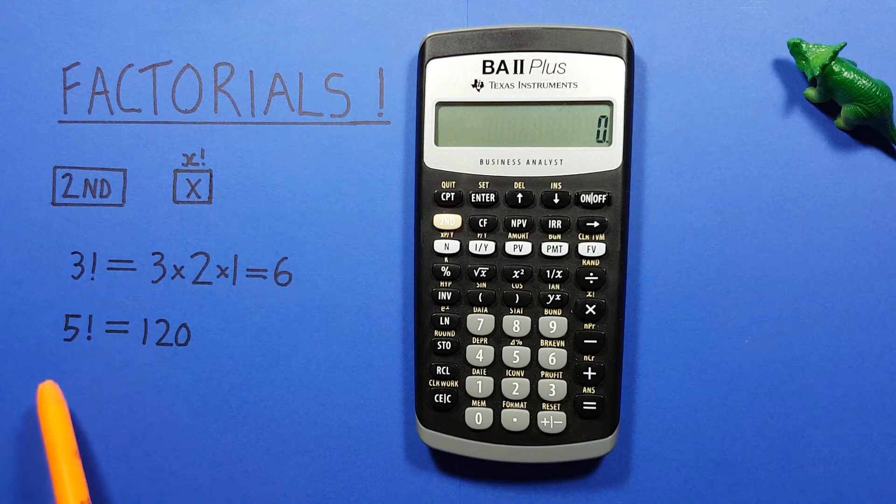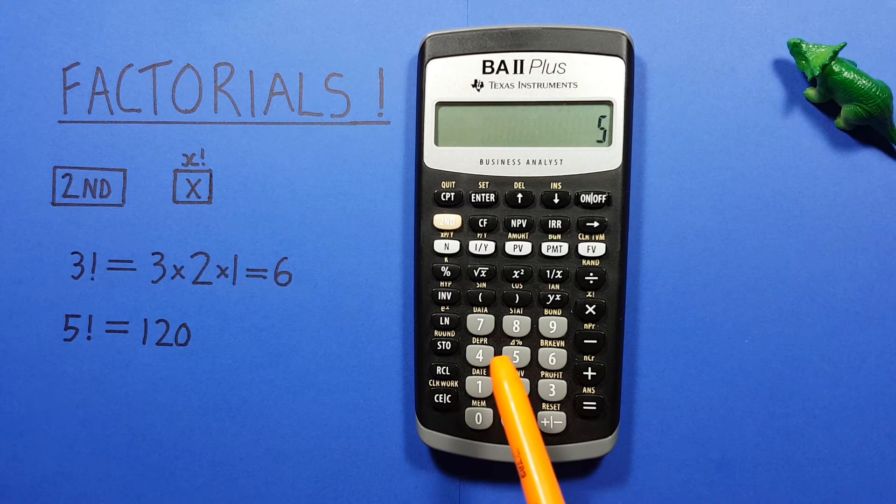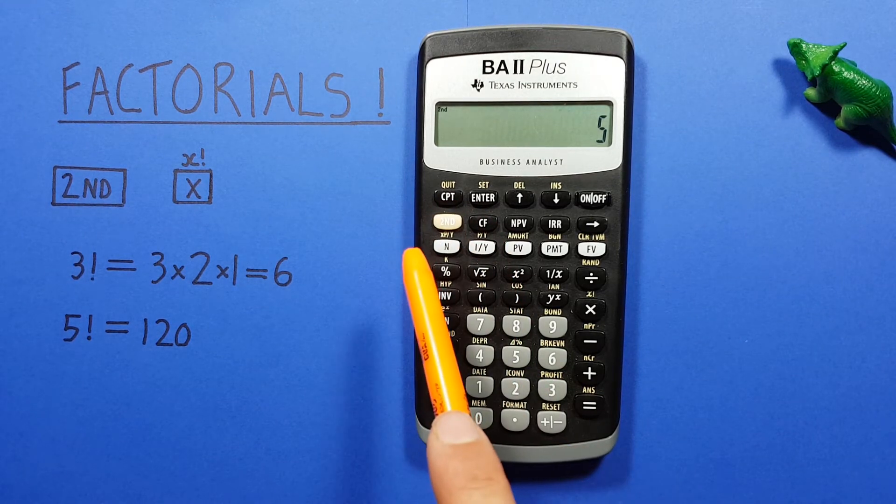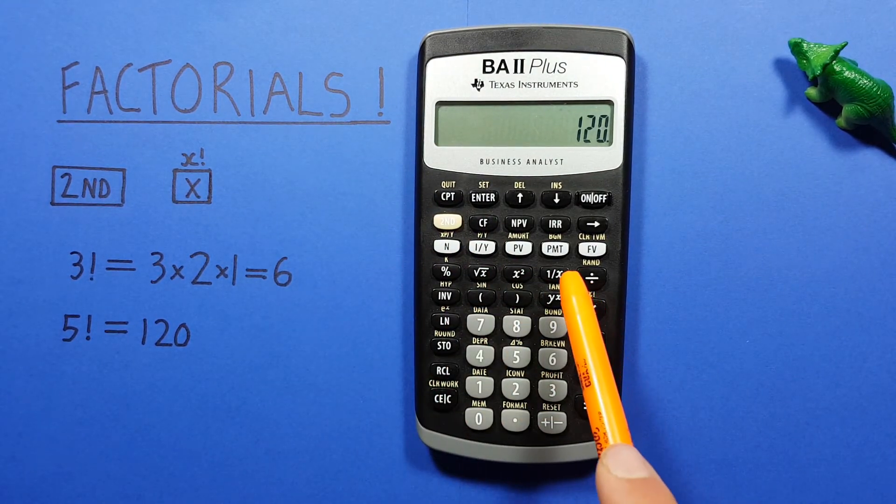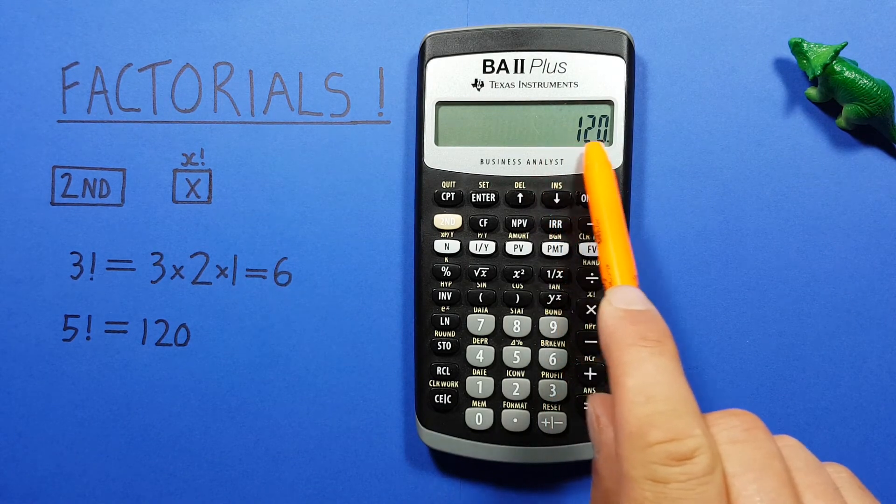Another example: 5 factorial. Place the 5 on the screen, then second function, multiplication with the second function of factorial, gives us 120.